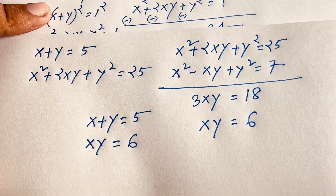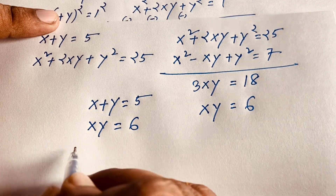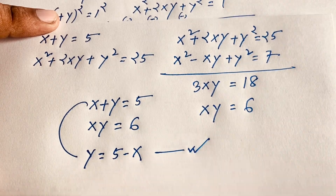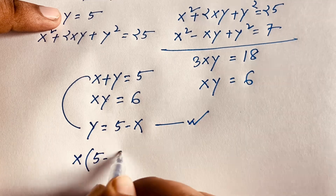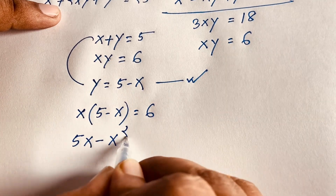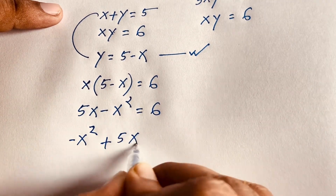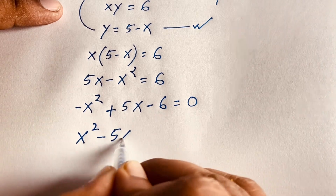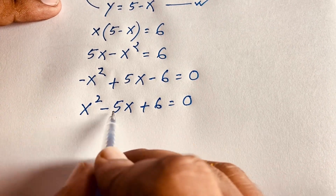Now we find the values of x and y. From x + y = 5, we get y = 5 − x. Substituting into xy = 6: x(5 − x) = 6, which gives 5x − x² = 6, or rearranging: x² − 5x + 6 = 0.